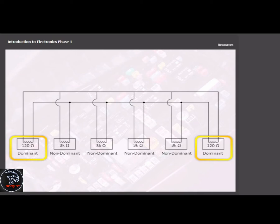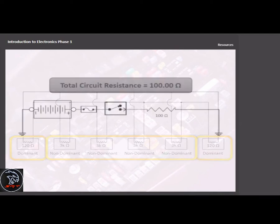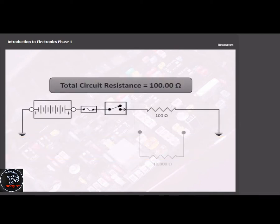For example, adding a 10,000 ohm resistor in parallel to a circuit with a resistance of 100 ohms only decreases the total circuit resistance by about 1 ohm.